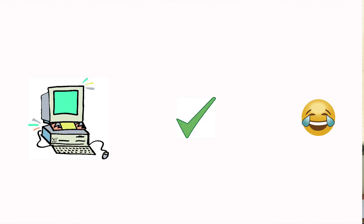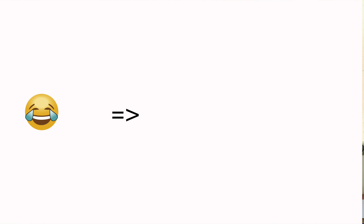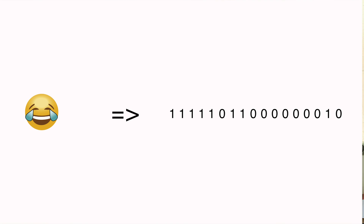So how does a computer understand it? Because there is a language for communication between them. This thing looks like this for a computer — a sequence of zeros and ones, that's it, nothing more, nothing less. Not just smileys and emojis — it's all the digital data that is present out there: all your images,